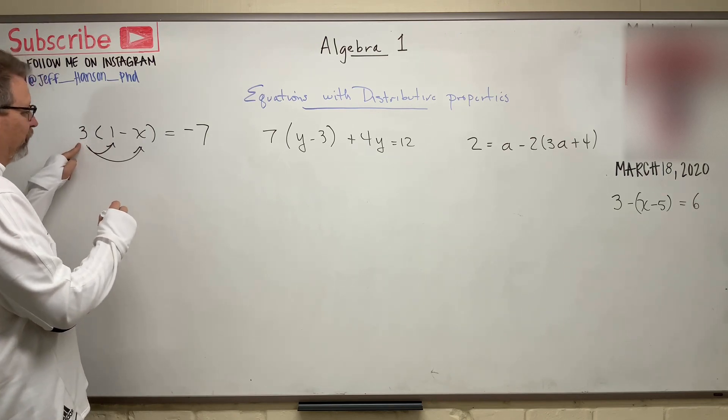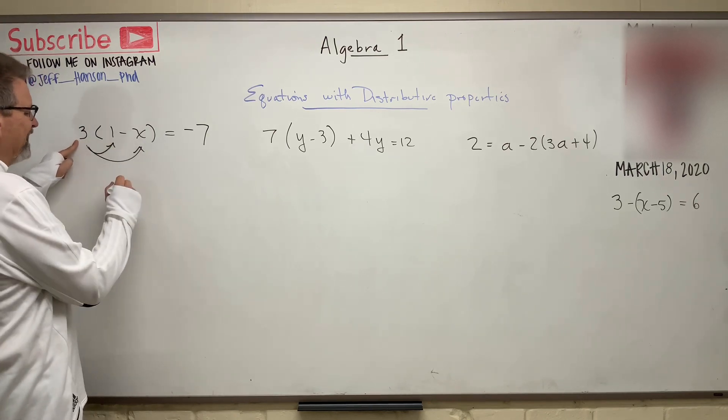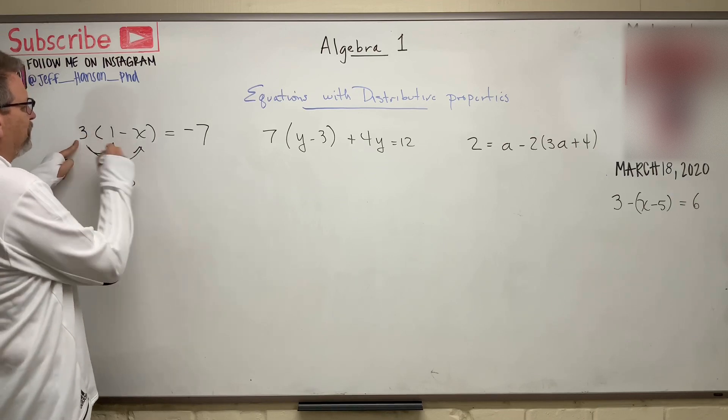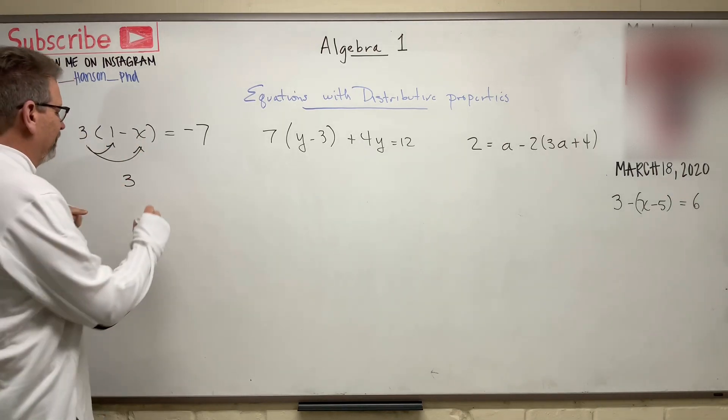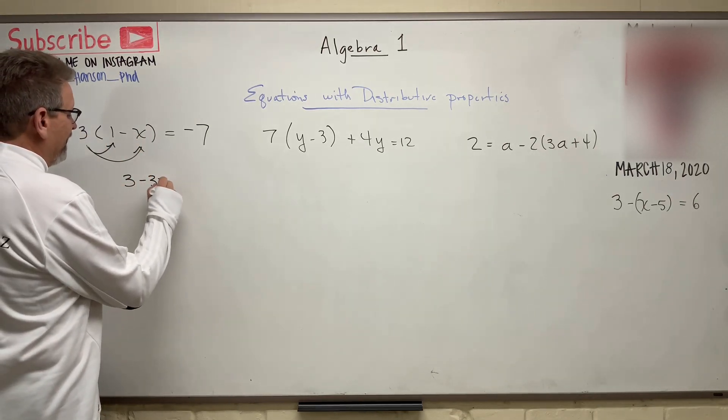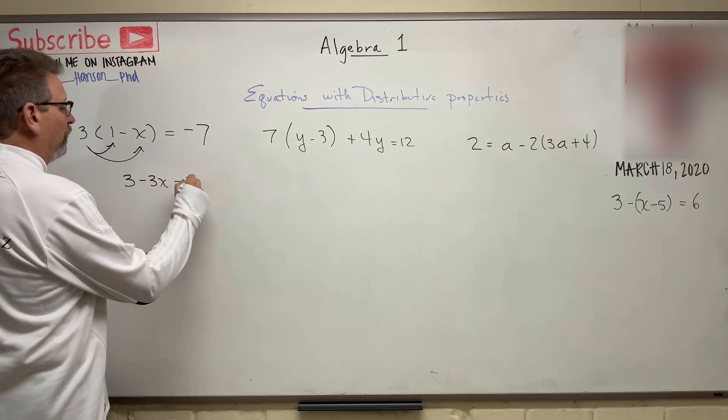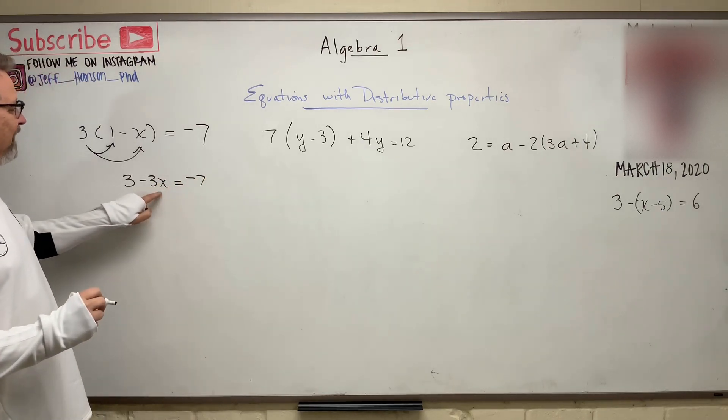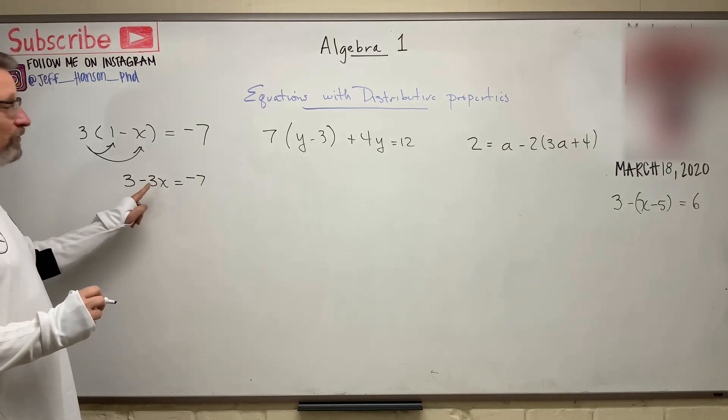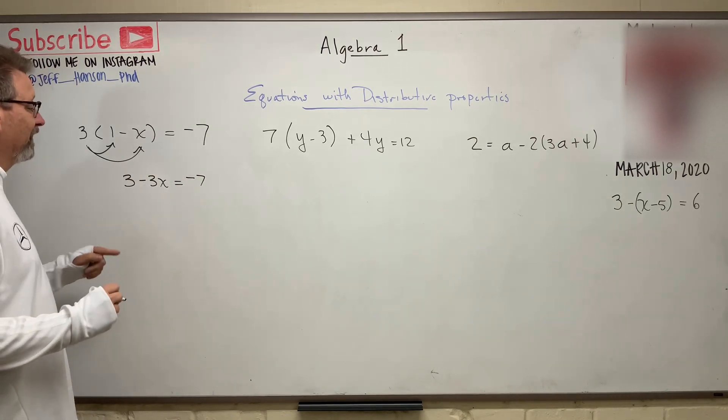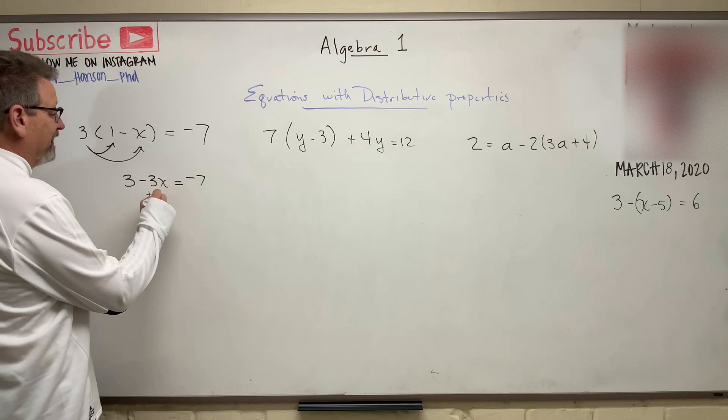So let's distribute this. Three times one is three, and three times negative x is negative 3x, isn't it? Equals negative seven. Now let's get this guy all by himself. All right, so what I'm going to do is I'm going to add him to the other side so I can get him over there.